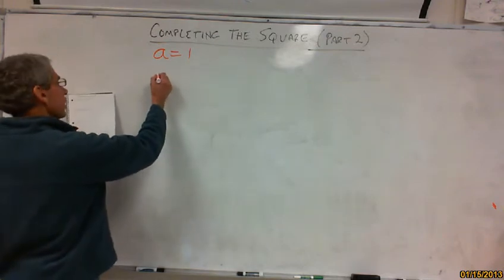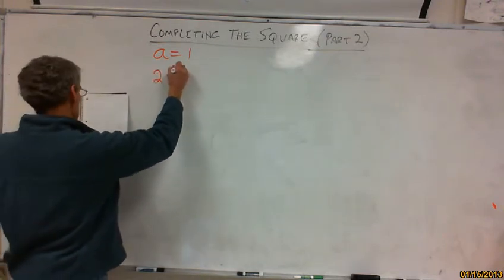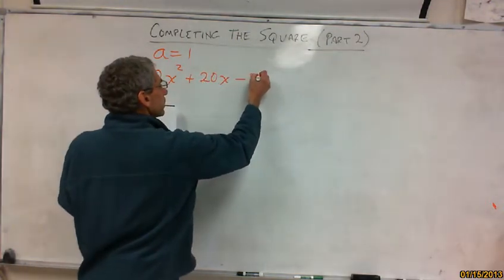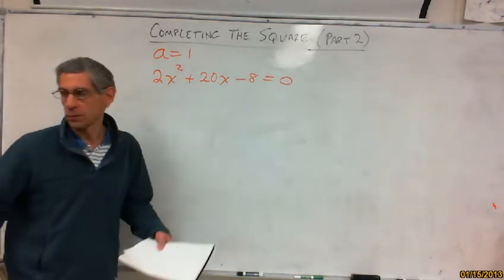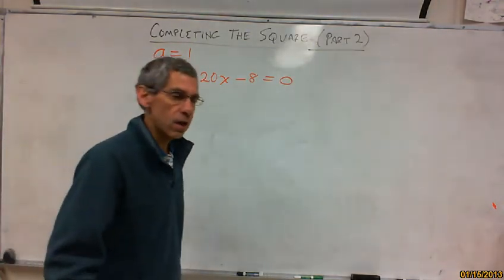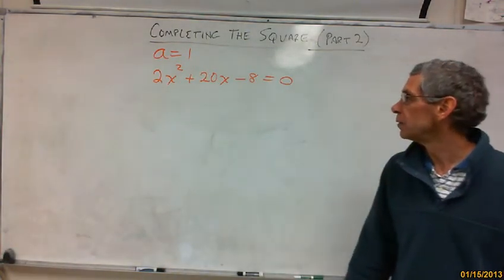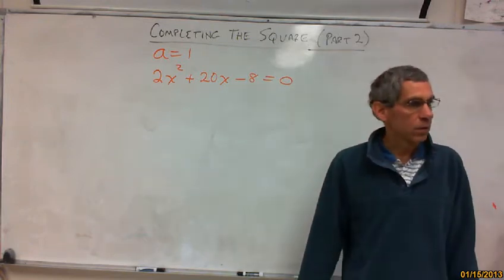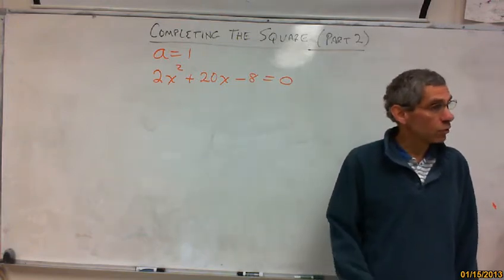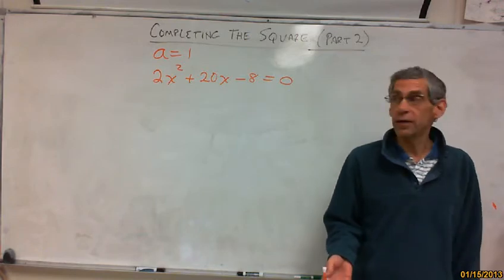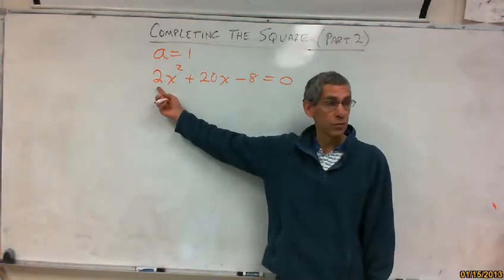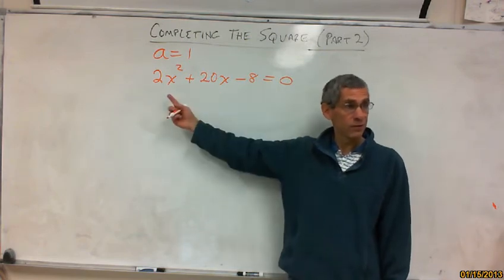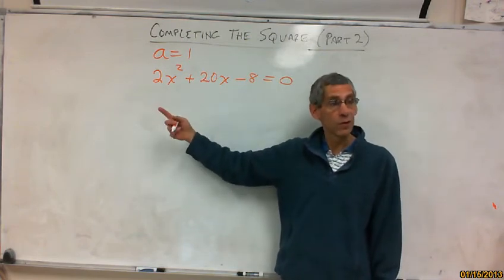So, alright, so we'll try one. We'll try this one. We're going to try 2x squared plus 20x minus 4 equals 0. Now I'm going to say I want to solve this by completing the square. Does A equal 1? No. So I have to make A equal 1 and there's only one way to make A equal 1. I have to divide everything by 2.